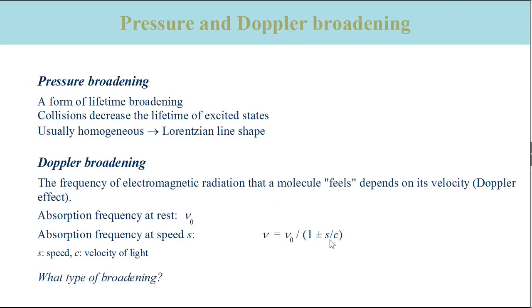Where s is the speed of the particle and c the velocity of light. For a gas, the particle speed is distributed according to the Maxwell distribution. Because of this, there is a spread of velocities which broadens the line of a transition. This line broadening is usually far greater than the natural line width.